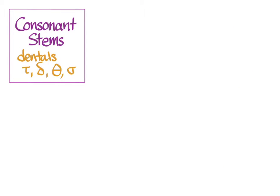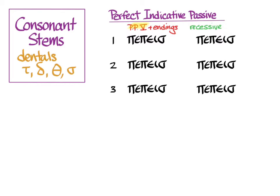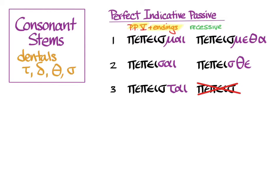Now the last group: verbs with dental consonant stems. In the perfect indicative passive, we use pepeismai from peitho as our fifth principal part, and the stem is pepeis-. First singular and plural are easy. In the second person singular we just lose one sigma. In the third singular we just add the ending. In the second plural we lose a sigma and add the ending. We don't worry about the third person plural. Adding recessive accent, the full paradigm is: pepeismai (I have been persuaded), pepeisai (you have been persuaded), pepeistai (she has been persuaded), pepeismetha (we have been persuaded), and pepeisthê (y'all have been persuaded).